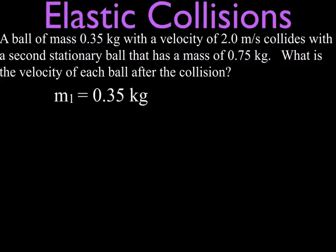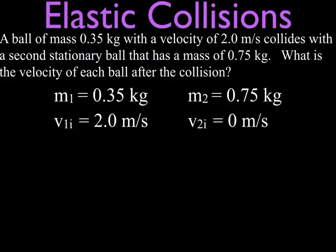The first thing we're going to do is write down all our values because we have two balls and two velocities, and we want to make sure we get it all straight. So we write down m₁ is 0.35 kg and its initial velocity is 2 m/s. The second ball has a mass of 0.75 kg and it has a velocity of 0 because it's not moving, it's stationary, it is at rest. And of course we want to know what's the final velocity of each of them after the elastic collision.